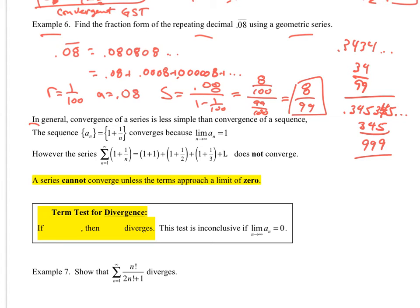All right, then, in general, convergence of a series is less simple than convergence of a sequence. In fact, it's a lot more difficult. So let's look at this one. This one says the sequence a sub n is equal to 1 plus 1 over n. What happens with that? Well, it converges because the limit as n goes to infinity of a sub n is equal to 1. So it goes to some limit.